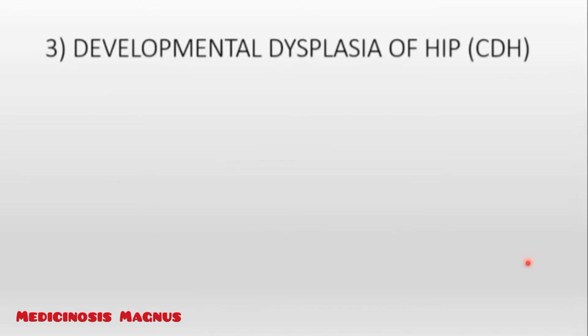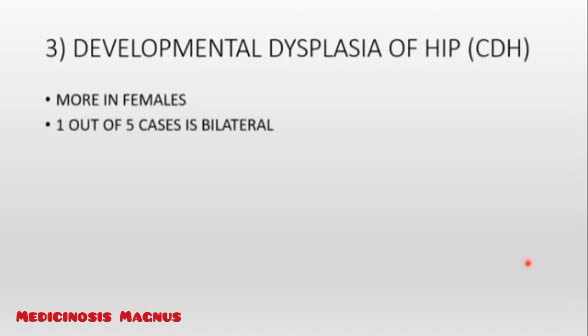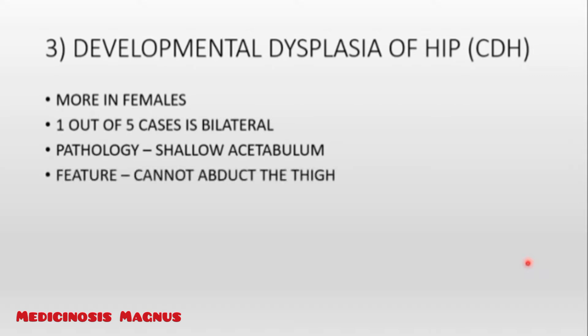The next condition is developmental dysplasia of the hip, also called congenital dysplasia of the hip. It is seen more in lean females, and one out of five cases is bilateral. The problem here is the acetabulum, which is usually curved and deep for the femoral head to fit in, but is now shallow. So the femoral head cannot fit in, and the patient cannot abduct the thigh — meaning both thighs moving apart from each other.